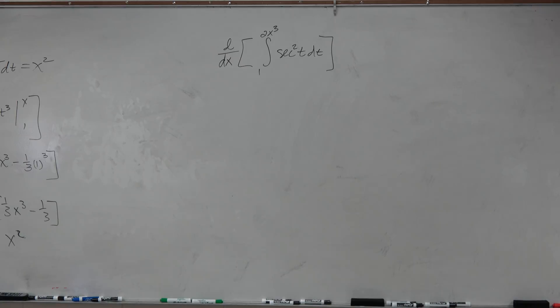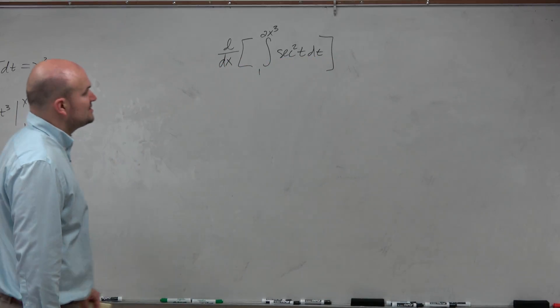So in this case, though, we have d over dx of 2x cubed, or the integral from 1 to 2x cubed of secant squared t, dt.